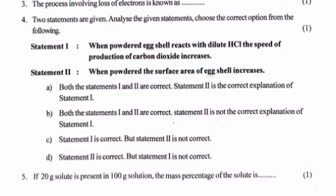Question 4: Two statements are given. Analyze the given statements and choose the correct option from the following. Statement 1: When powdered eggshell reacts with dilute HCl, the speed of the production of carbon dioxide increases. Statement 2: When powdered, the surface area of eggshell increases. Answer: A. Both statements 1 and 2 are correct. Statement 2 is the correct explanation of statement 1.